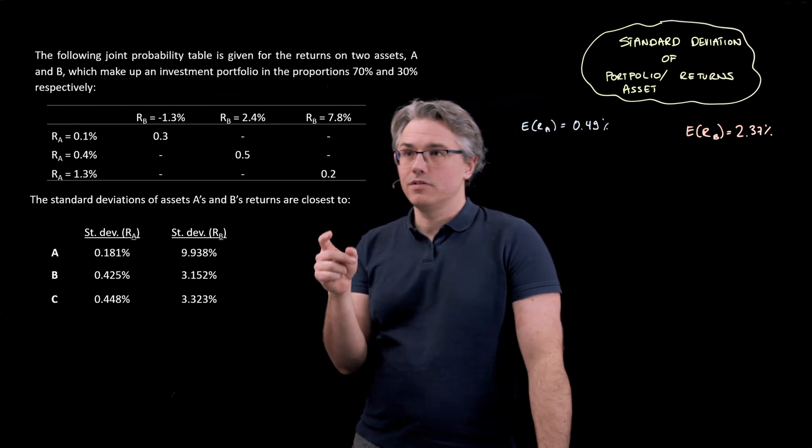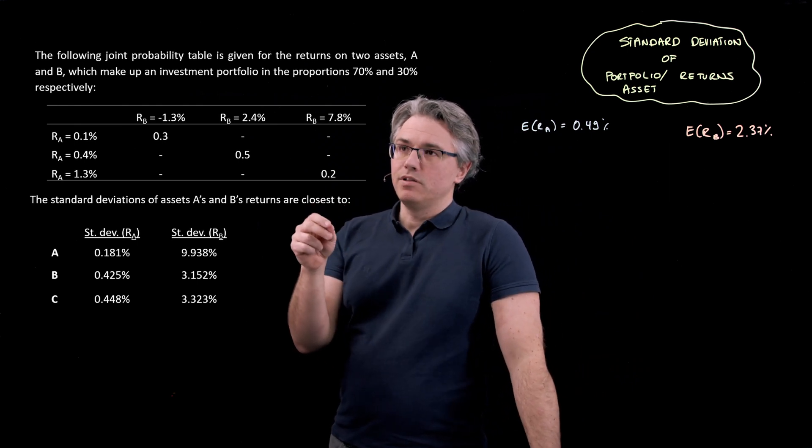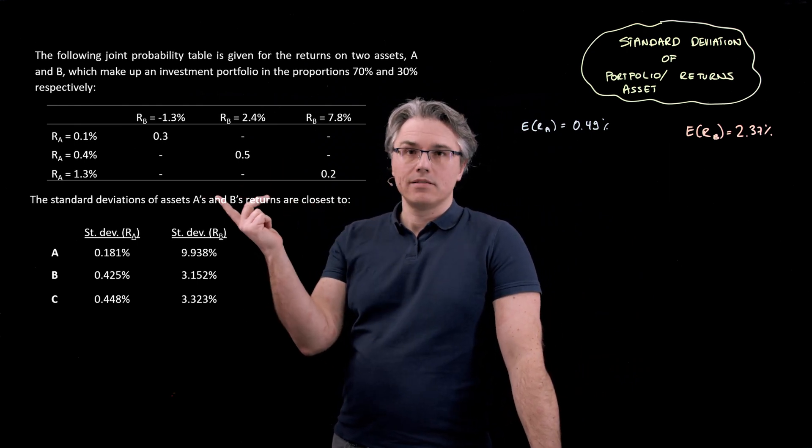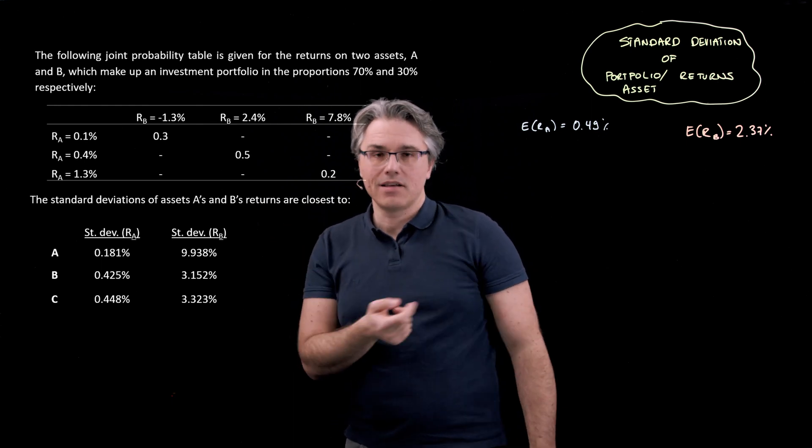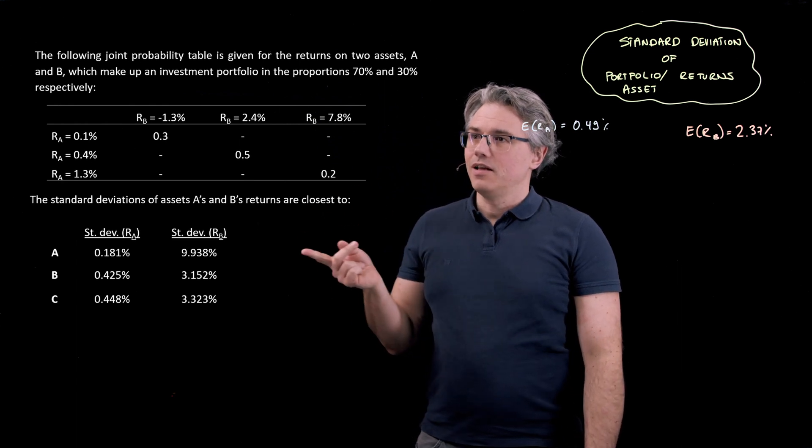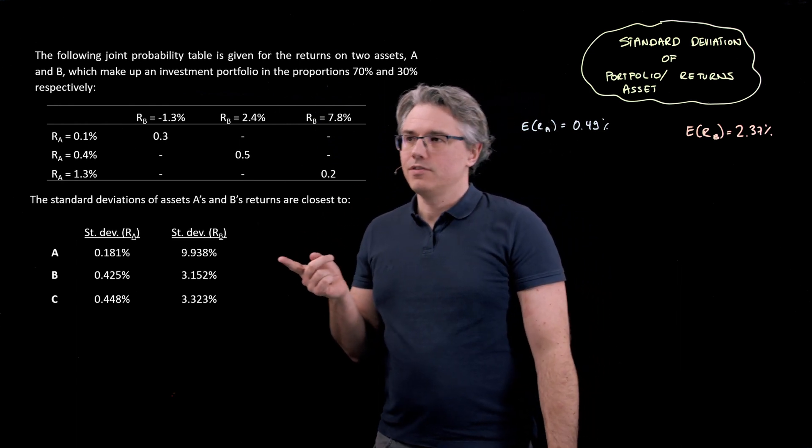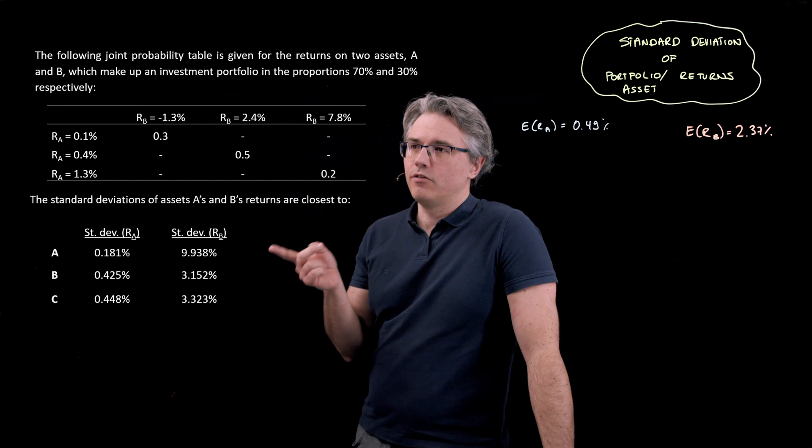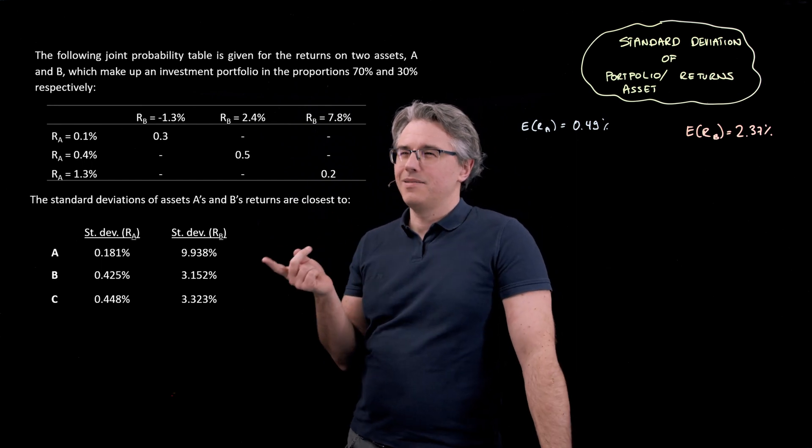It's a joint probability table because we've got the probability of one asset taking on a certain value and at the same time, another one taking its own kind of set of values. In this problem, we're asked for the standard deviations of assets A and B's returns.